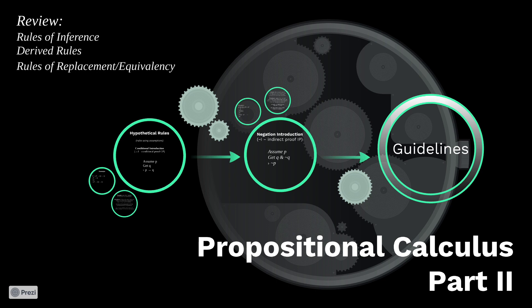We began our study in propositional logic in Module 5, where we focused on the meaning and importance of logical operators, and we also looked at how truth tables function. Then in Module 6, we began our two-part study in propositional calculus. In that module, we looked at several rules of inference or implication, derivation, derived rules, and then rules of replacement or equivalency.